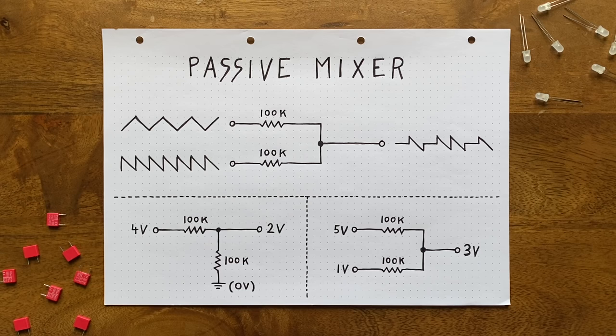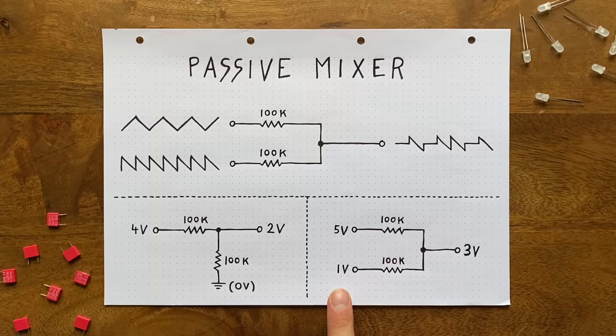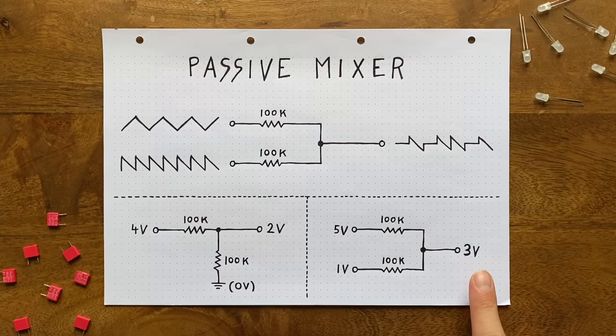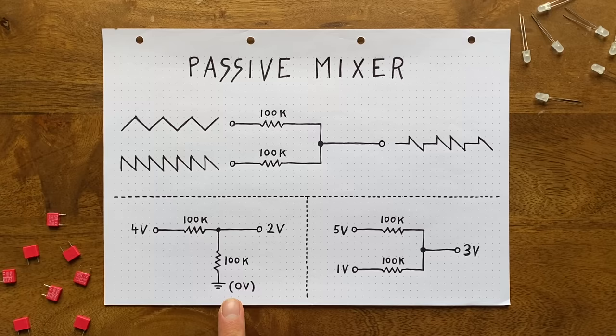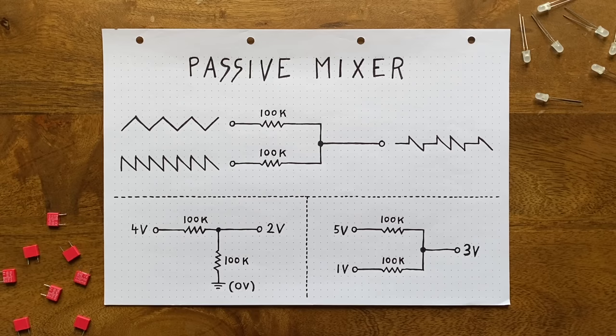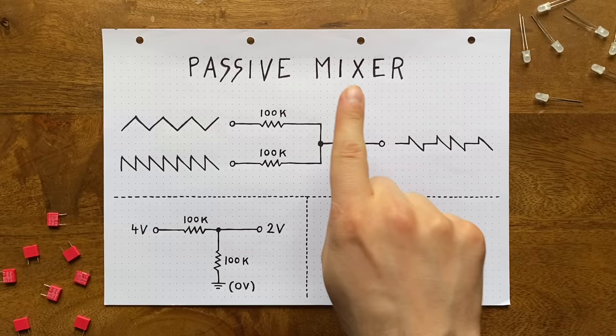Since both resistors in our divider are of the same value, that 4V difference will be slashed in half, and the result gets added to the lower of the two input voltages, giving us a 3V output. The grounded voltage divider does exactly the same thing, if you think about it. It slashes the difference between our reference voltage and ground in half, and then adds it to the lower of the two input voltages. Because that operation stays the same regardless of what the exact input voltages are, the output will always be the midpoint between them. And that's why this setup works as a mixer. It simply puts out the average of our two input signals.